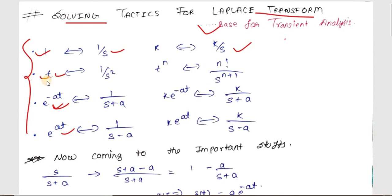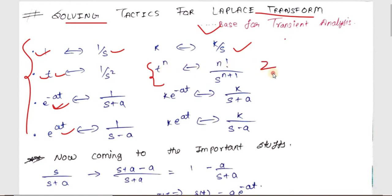If your voltage source depends upon t — let's say it is t — the Laplace transform will be 1/s². The proper formula is: the Laplace transform of t^n will be n! divided by s^(n+1). So if you want the Laplace transform of t², it will be 2!/s³, which is 2/s³.